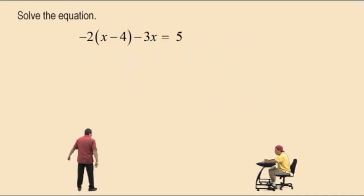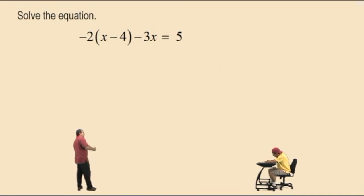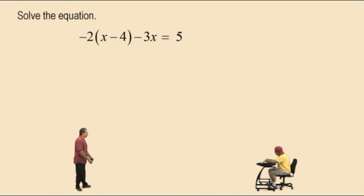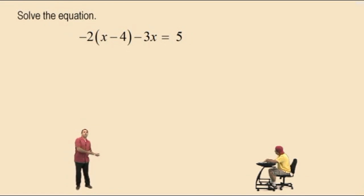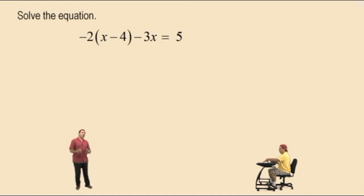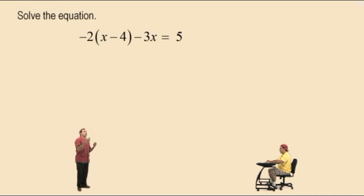Negative 2 times the quantity x subtract 4, subtract 3x, is equal to 5. What do we have to do first, Charlie? Get rid of the parentheses. So generally what we do is first get rid of the parentheses, then combine like terms, then isolate our variable and get our solution, and check if your answer is correct. Now if you're having trouble with combining like terms, you need to go back and watch the combining like terms videos so you'll be able to follow better.